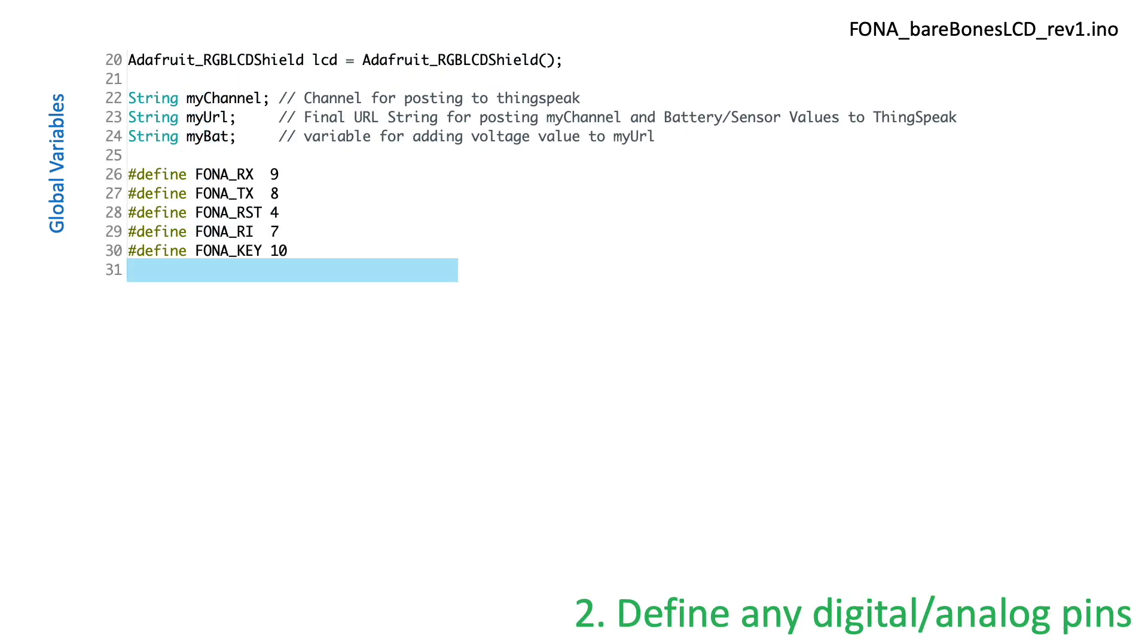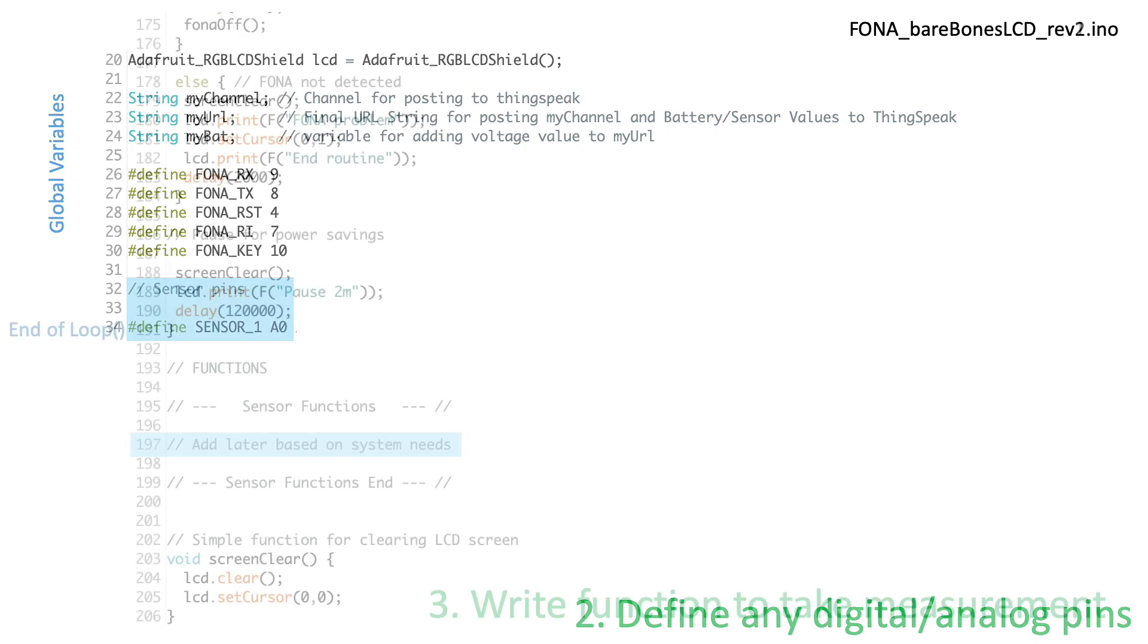Because I need to engage a new pin for registering the analog response from my sensor variable, I'll add it here. In this demonstration, I'll assign pin A0 to a constant called sensor1.